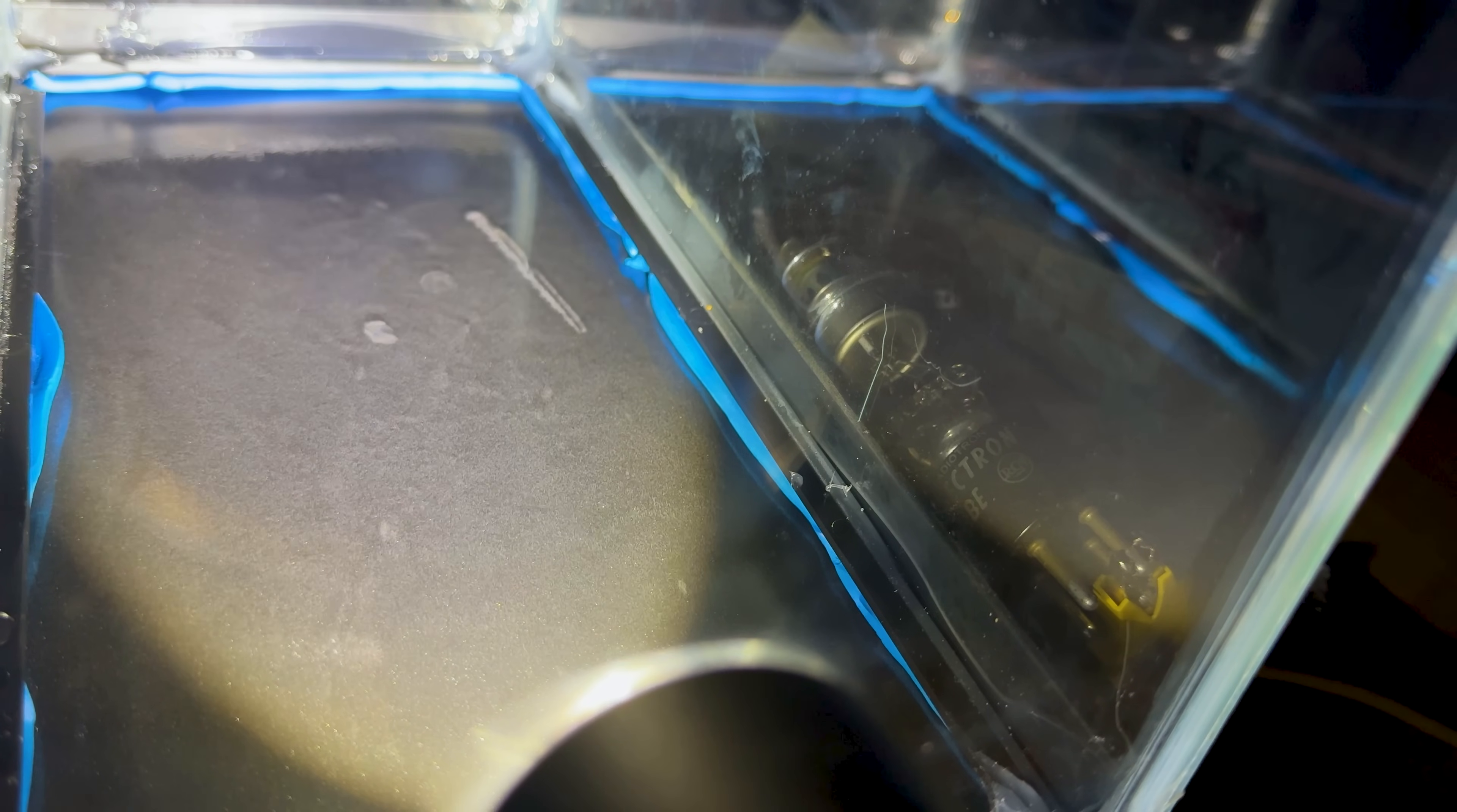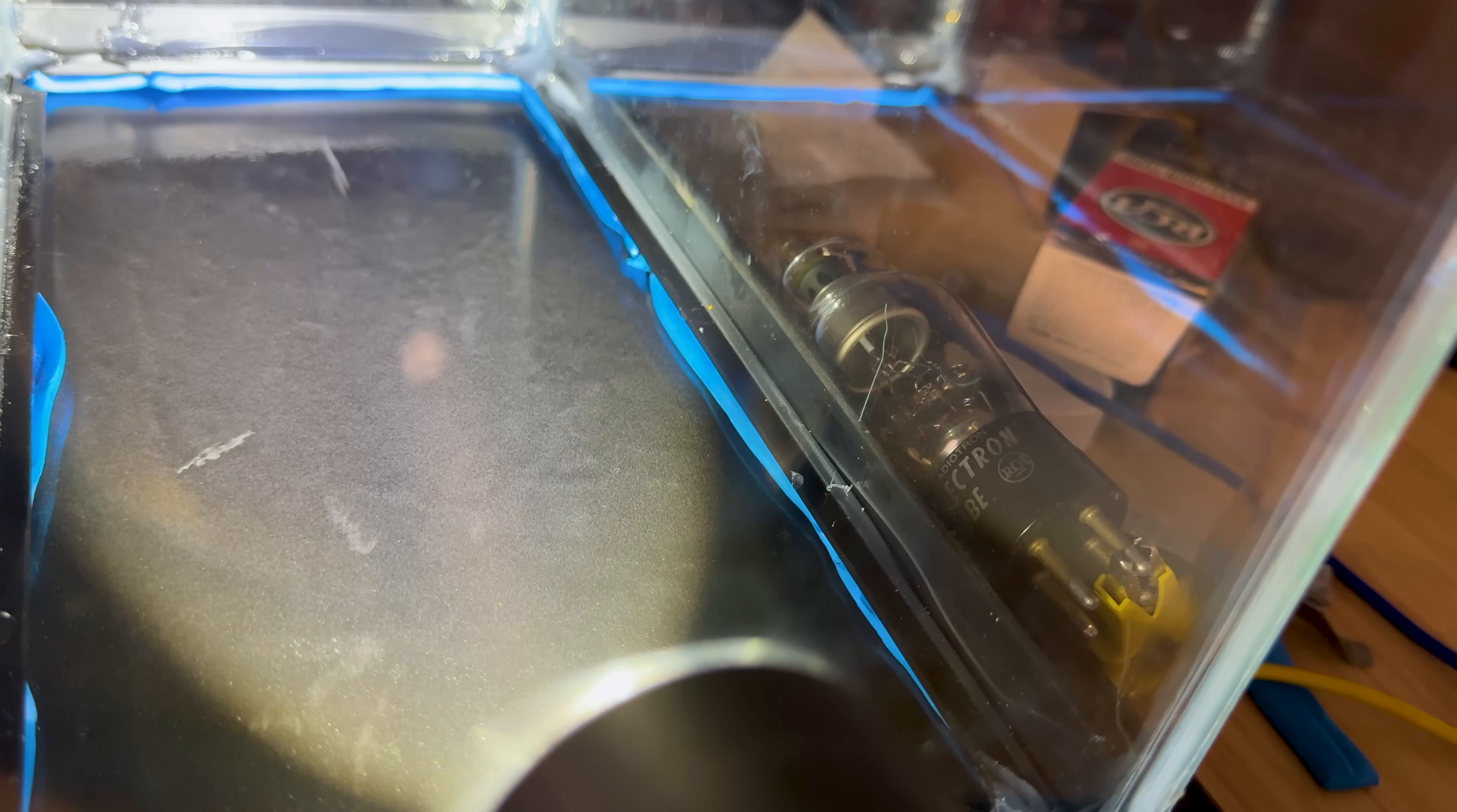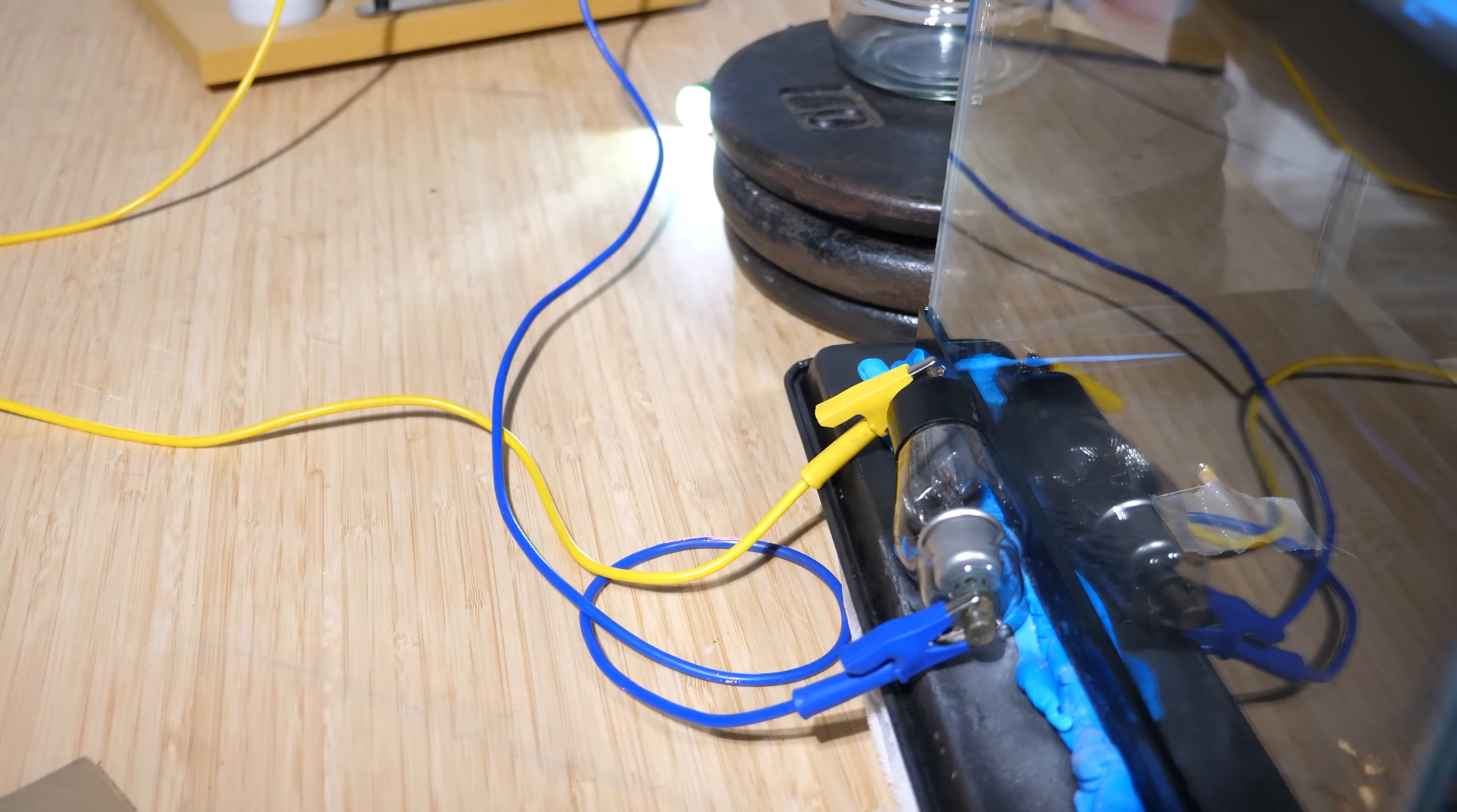When ionizing radiation goes through the chamber, it knocks electrons off molecules, creating ions. That's where the alcohol condenses right along the particle's path. So you can see the exact path that the particle took. But let's see if we can actually see an X-ray path. I'm going to have my bulb outside of the cloud chamber and just set it on the side here. So the X-rays are going to go through the glass through the cloud chamber.